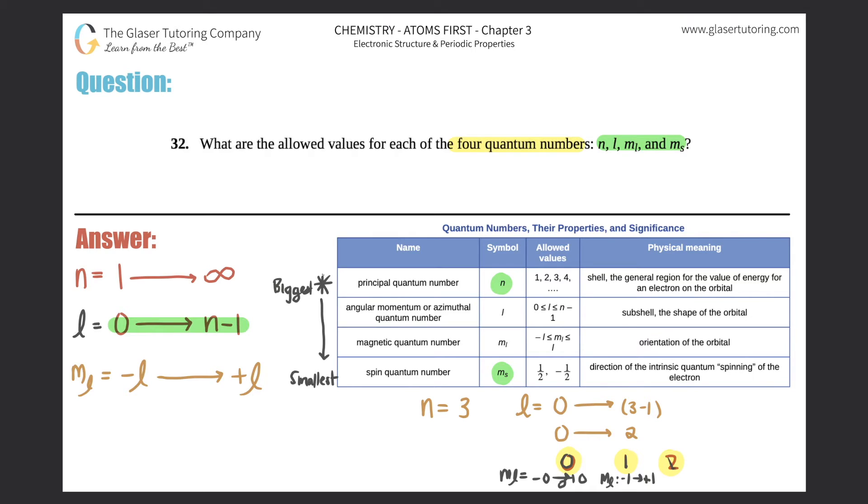For l equals two, the ml would be negative two all the way to positive two: negative two, negative one, zero, one, and two. So you would have five different values for your ml's for that specific l value.